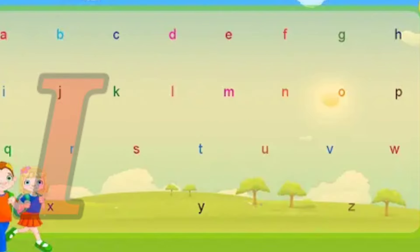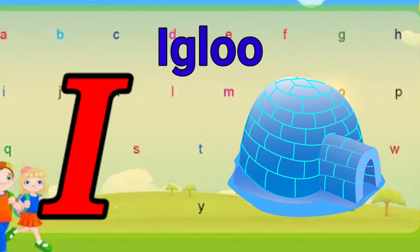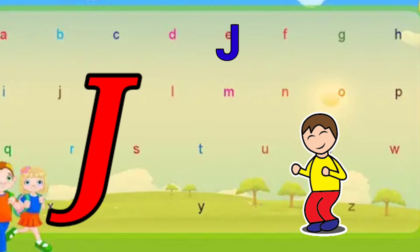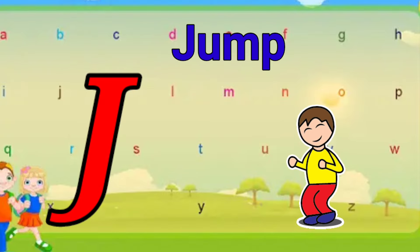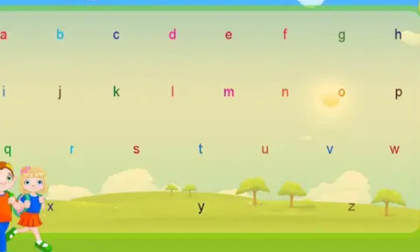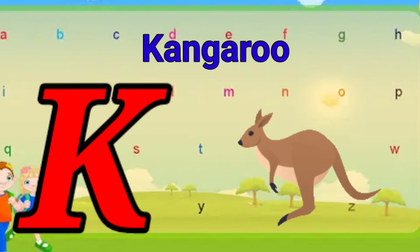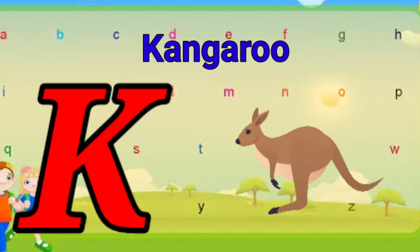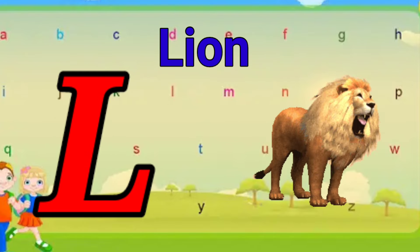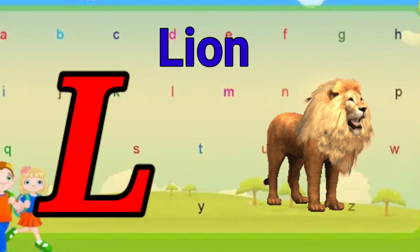I is for igloo, i-i-igloo. J is for jump, j-j-jump. K is for kangaroo, k-k-kangaroo. L is for lion, l-l-lion.